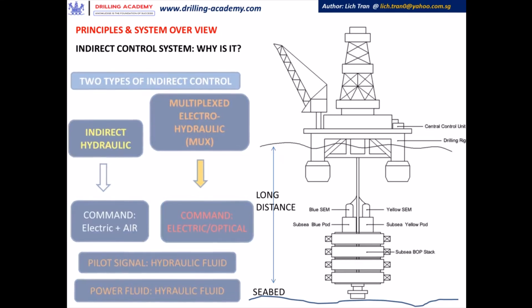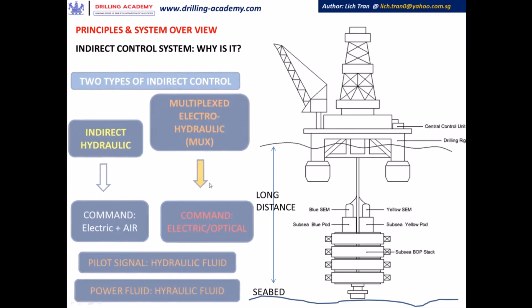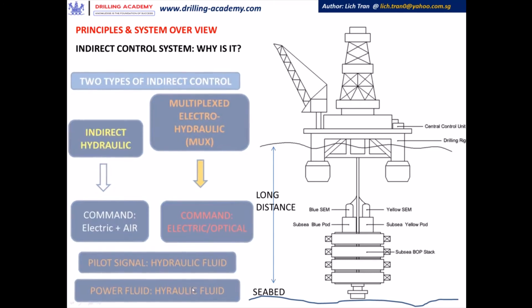There are two types of indirect control: the indirect hydraulic system and the multiplex electro-hydraulic system, which in short we call MUX — the most common system nowadays. The key differences between the two systems is that in the indirect hydraulic system, the command is composed of an electric part and an air-operated part, and the pilot signal is sent from surface down to the sub-sea part. In the MUX system, the command is composed either of electric or optical signal only, and the command is sent from the surface control unit down to the sub-sea BOP part. The pilot part only happens within the sub-sea portion, and the power fluid and pilot fluid are all hydraulic fluid happening at sub-sea as well.